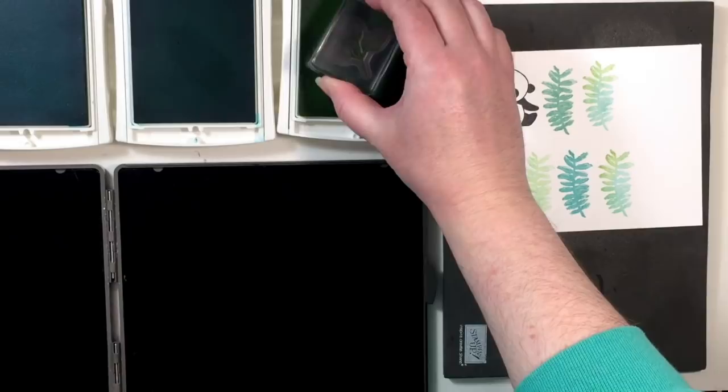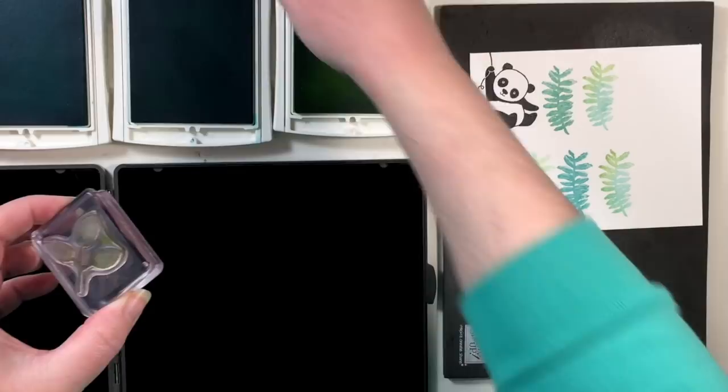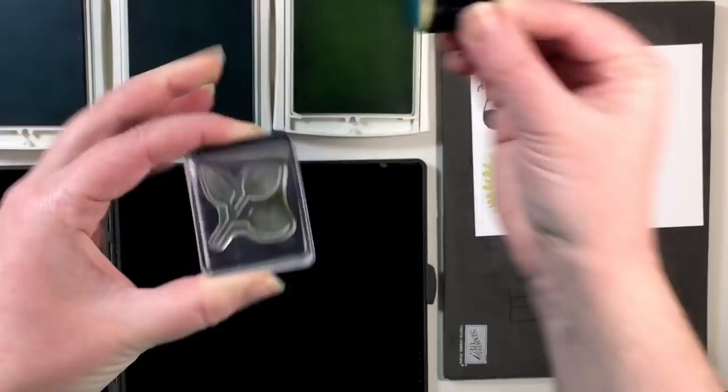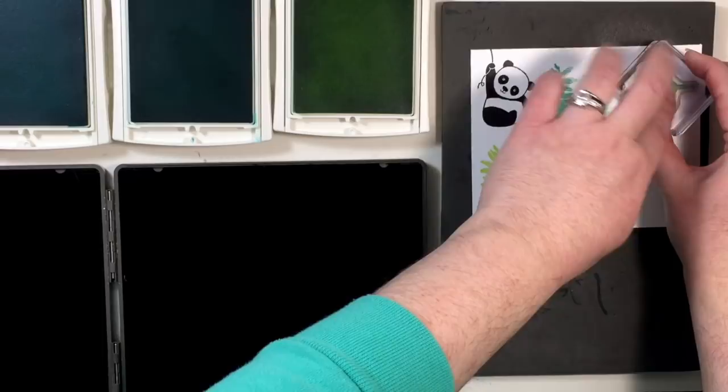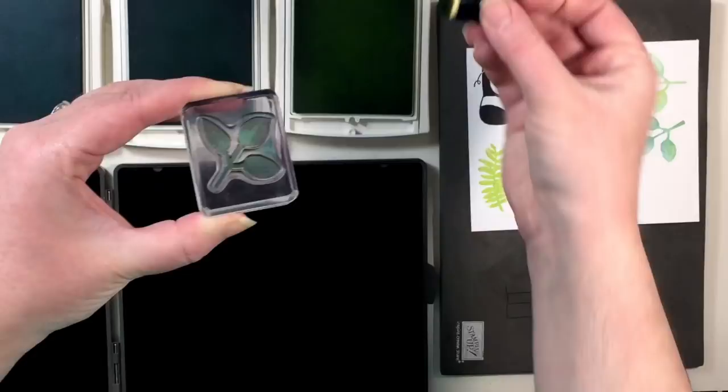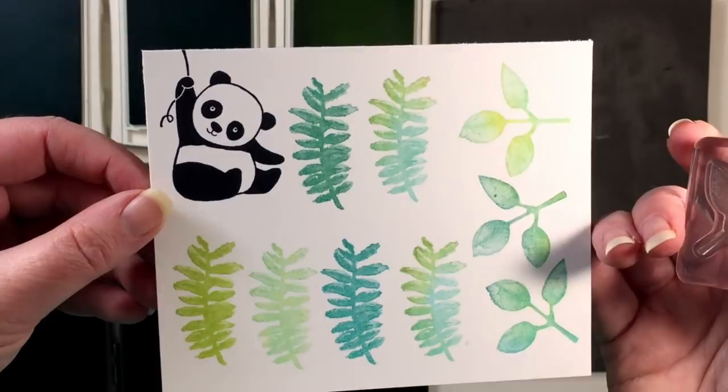Now taking that leaf stamp we're going to ink that up and this time I'm not going to stamp it in a solid color. I'm going to go straight for the variegated look. So we're just going to add some of those beautiful colors onto that stamp there. And look at how gorgeous all of those variegated ferns and leaves are. This is going to be a beautiful card.